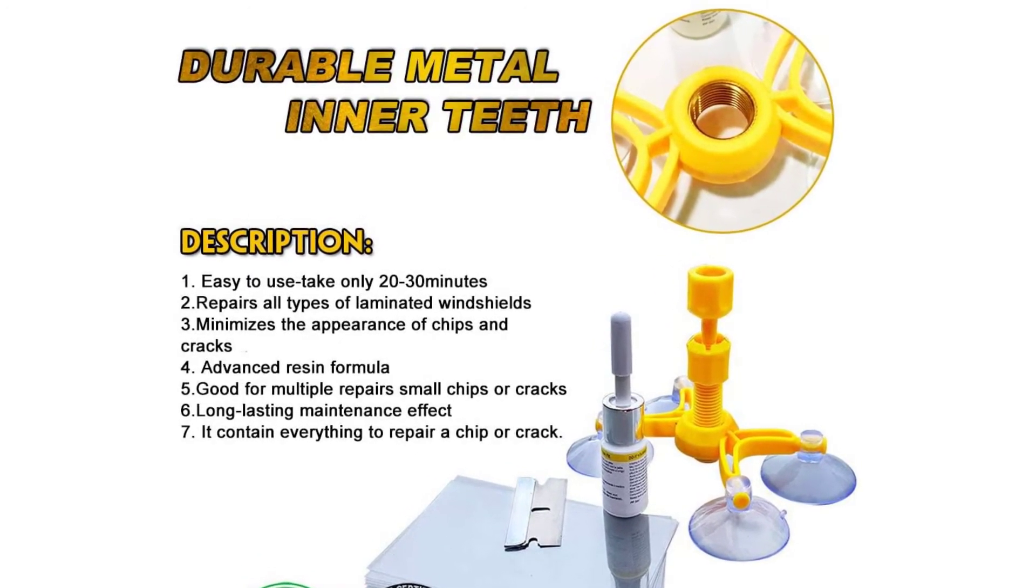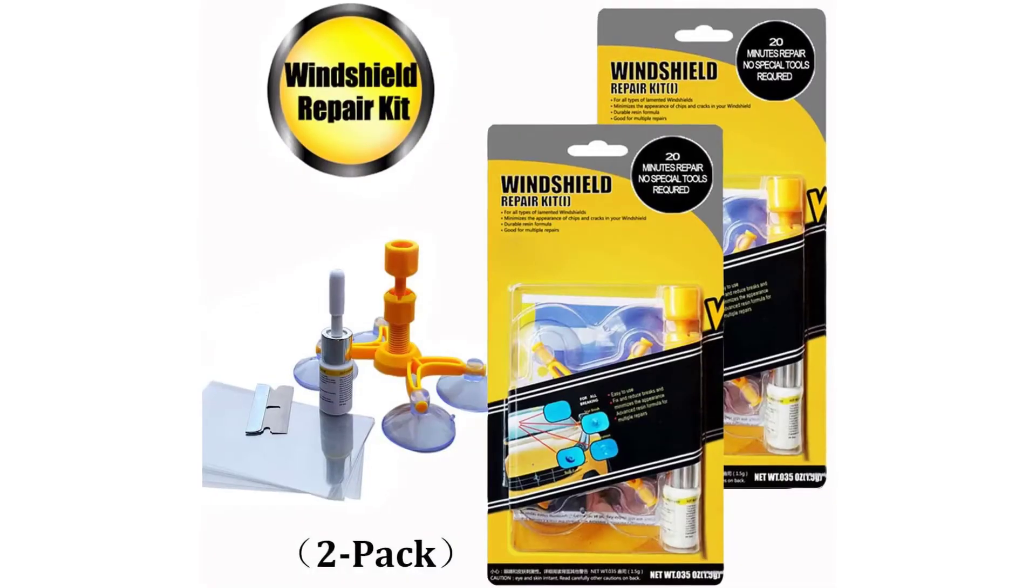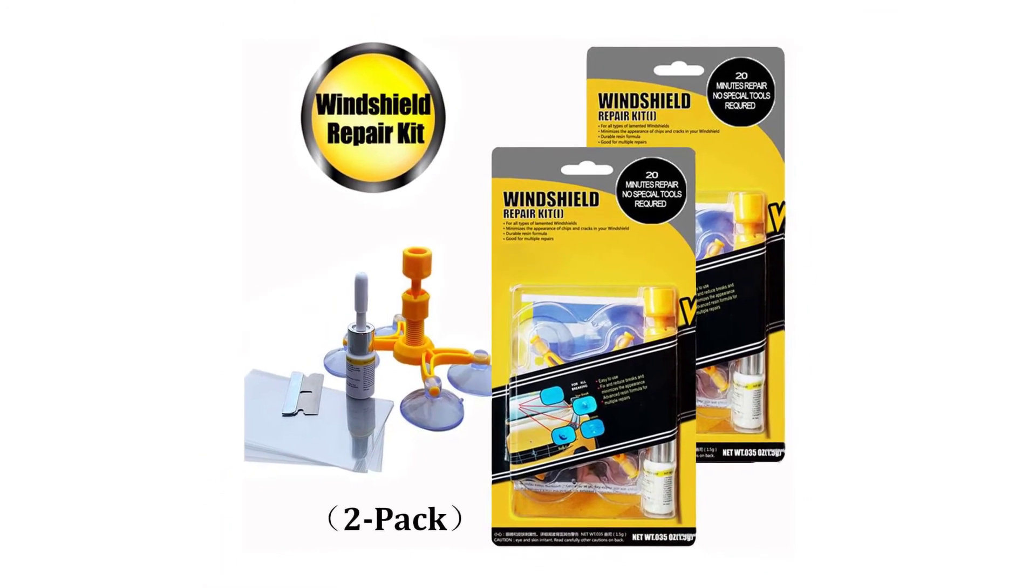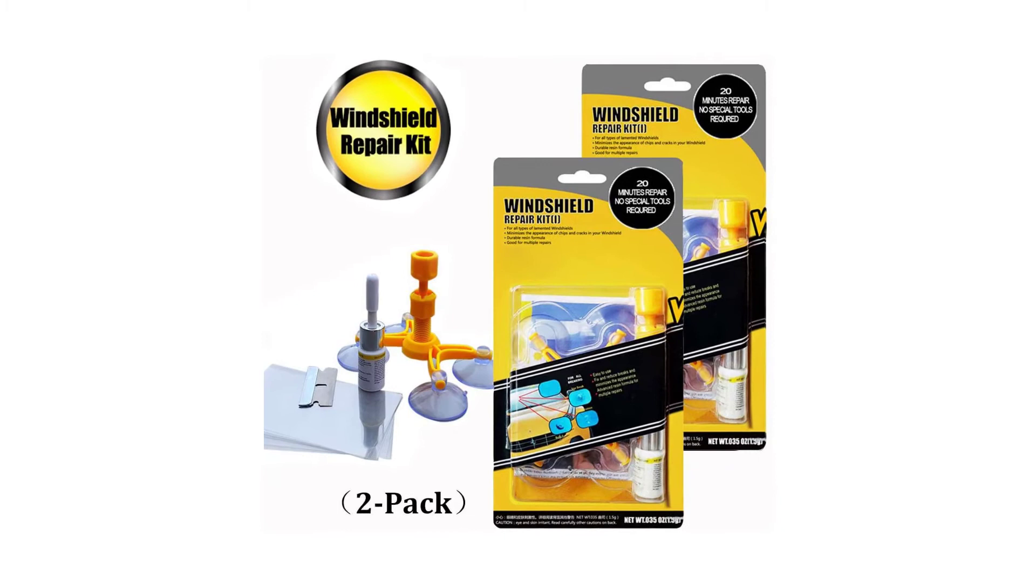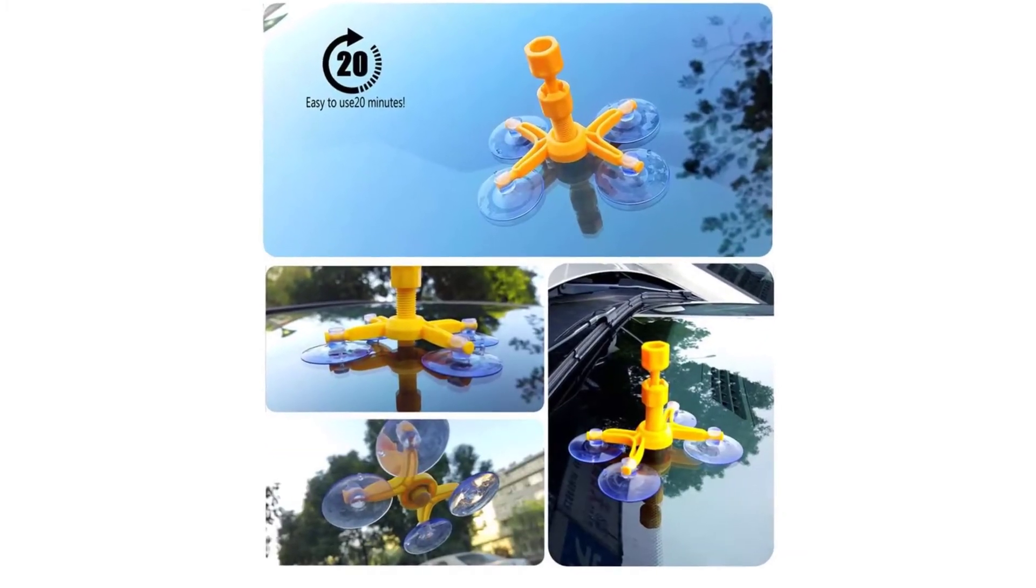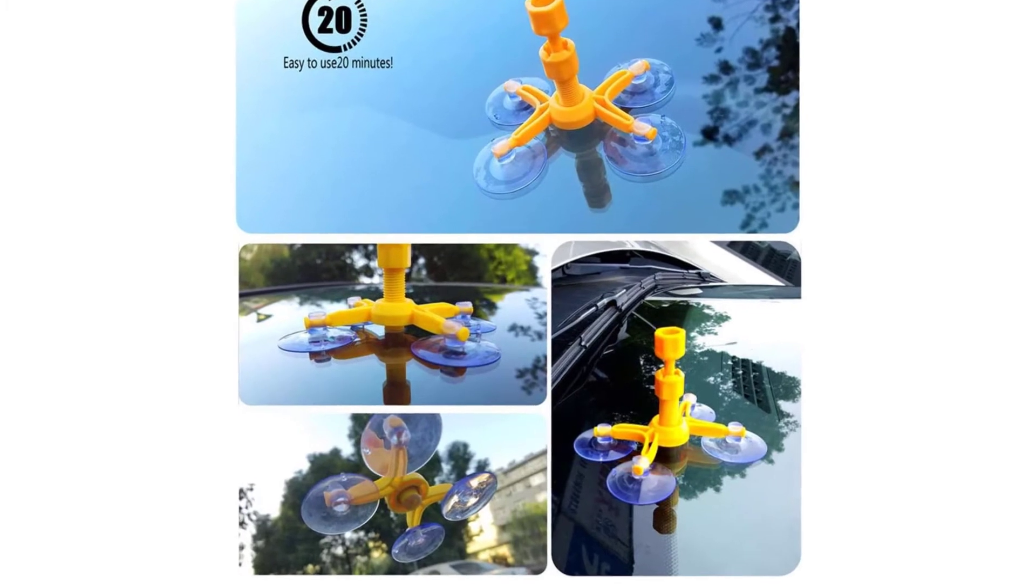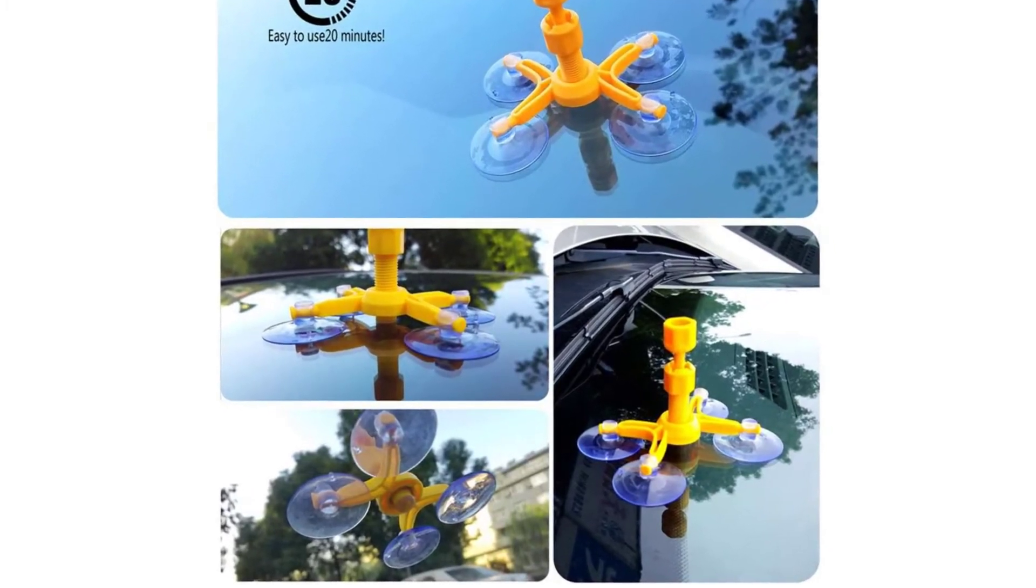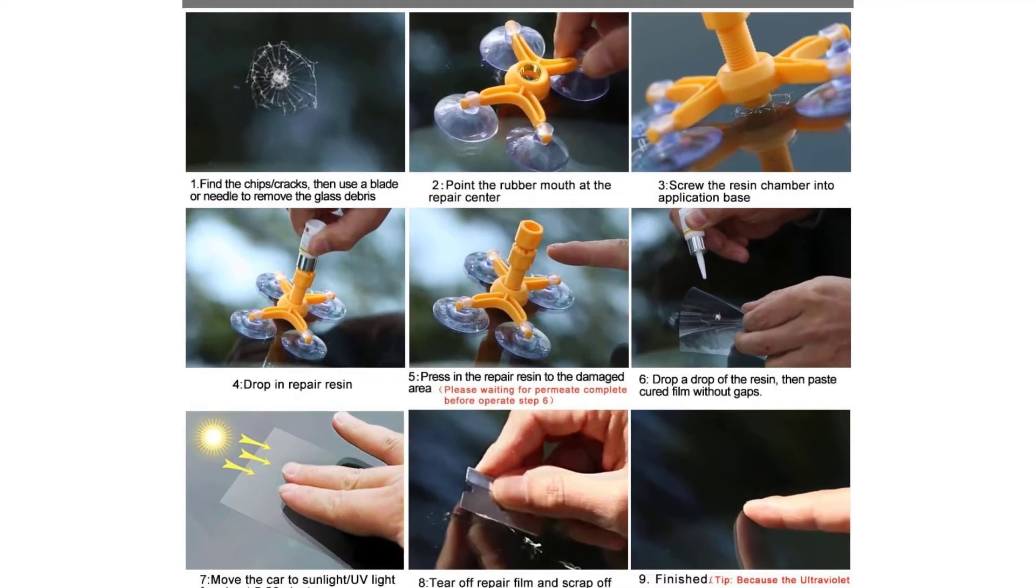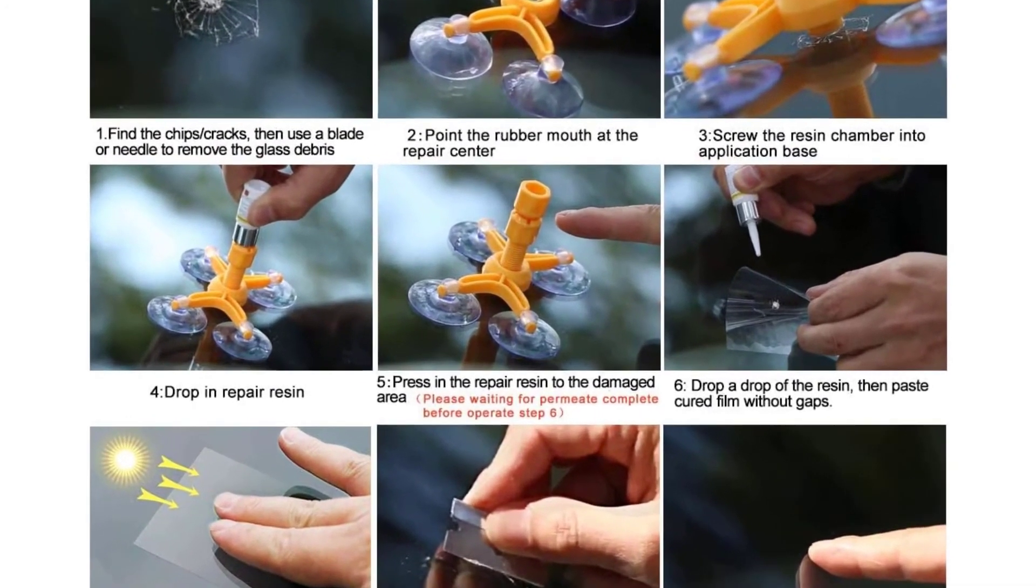Designed to effectively repair small cracks and chips in 20-30 minutes, this windshield repair kit will work on most types of outer glass. It works best on small chips, bullseye, star-shaped, half-moon crescents, and cracks not more than 12 inches and circular damage no more than 1 inch in diameter.